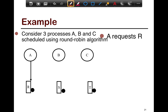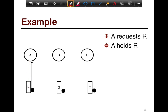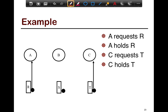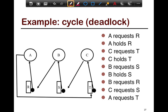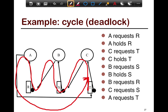In the simulation: A requests R and A holds R; C requests T and C holds T; B requests S and B holds S; then B requests R, C requests S, and A requests T. This is a subtle interaction of processes and resources, but once plotted on a resource allocation graph, it's very easy to visualize the whole cycle. You can clearly see it, test for it, and all you need is a graph cycle-searching algorithm.